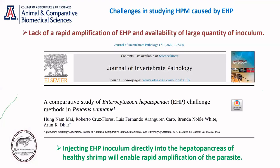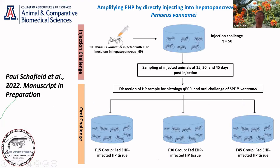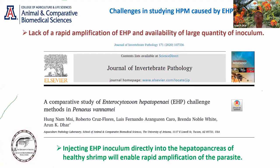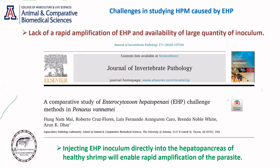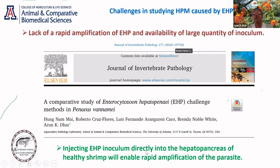One of the challenges we faced in our lab soon after I joined was the lack of a rapid amplification method. There was no way to amplify EHP relatively quickly and generate large quantities of inoculum. We did a series of studies to see what could be the quickest, fastest way of generating large quantities of EHP. We found that if we inject inoculum directly into a healthy animal, we can reproduce the disease very quickly — within less than two weeks, actually.